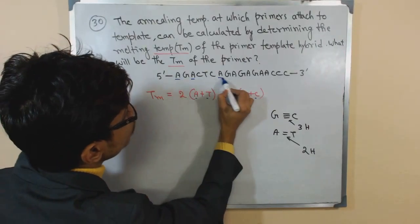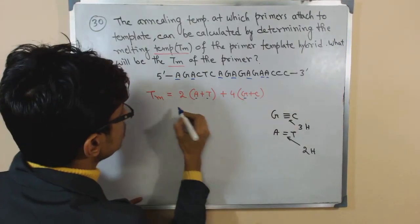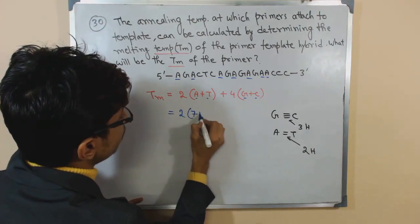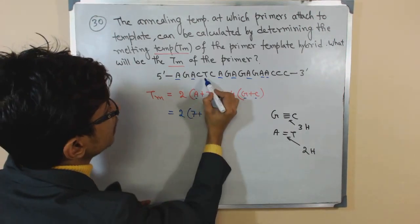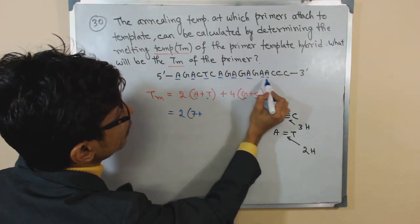Adenine: 1, 2, 3, 4, 5, 6, 7. So 7 adenine. Let us put here 7 plus thymine - 1. So it is only 1.